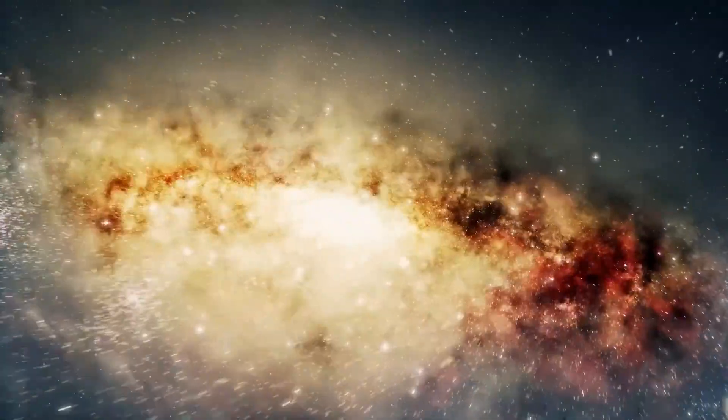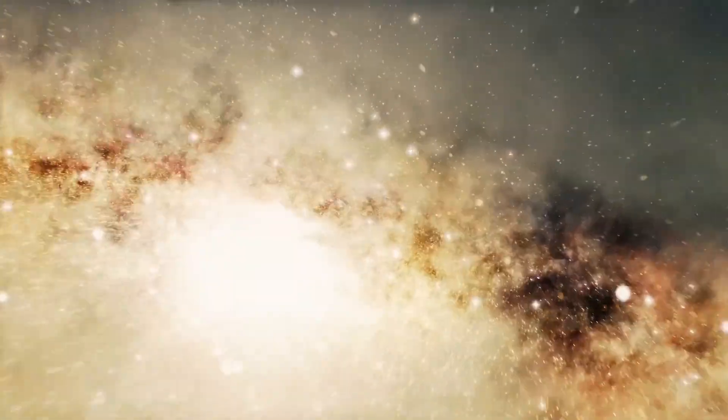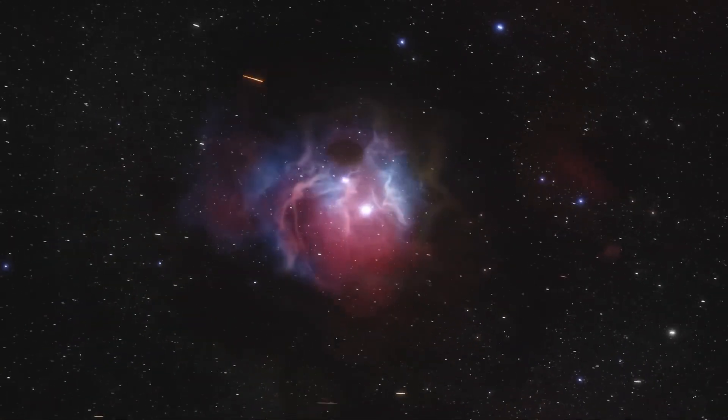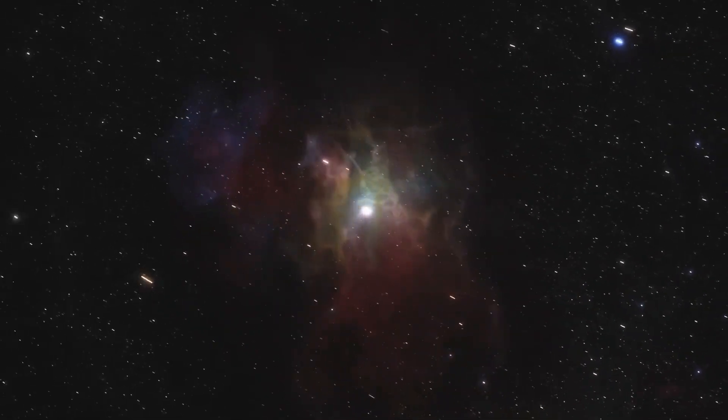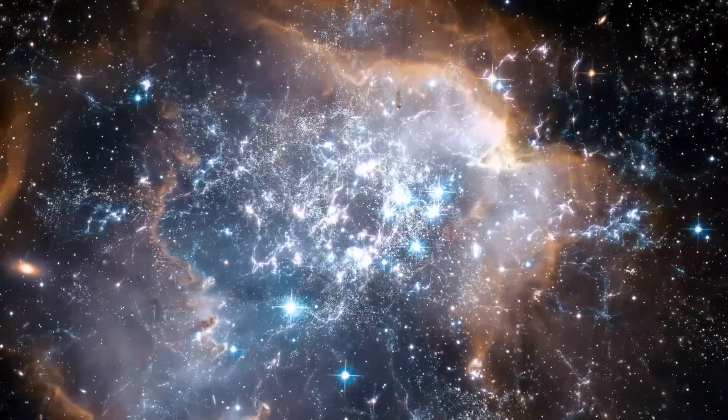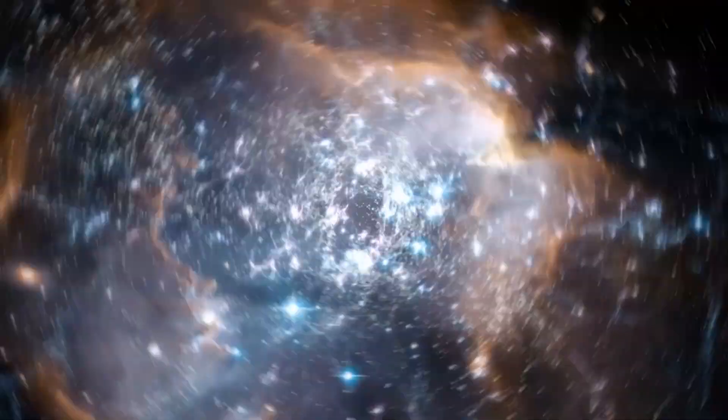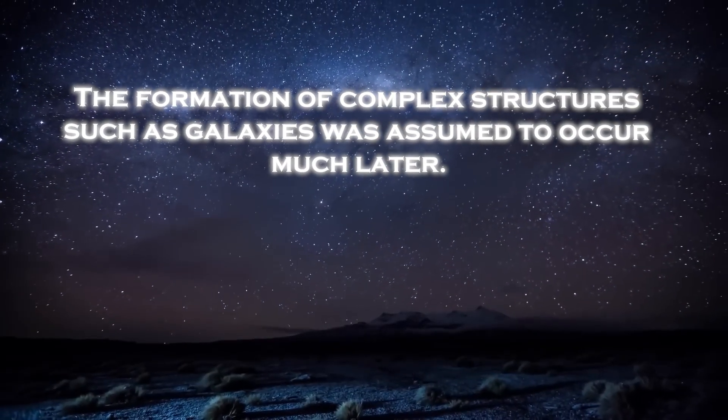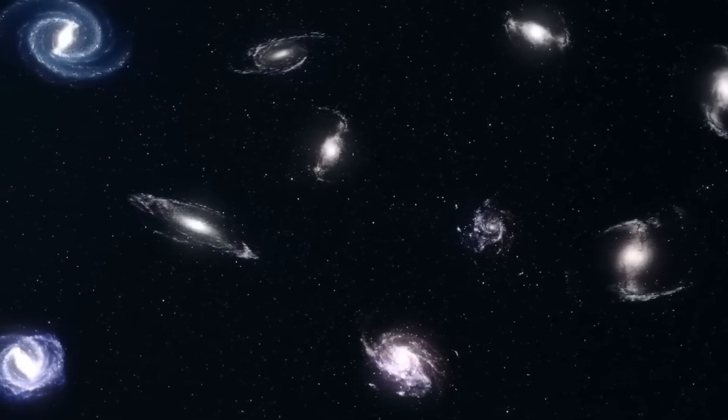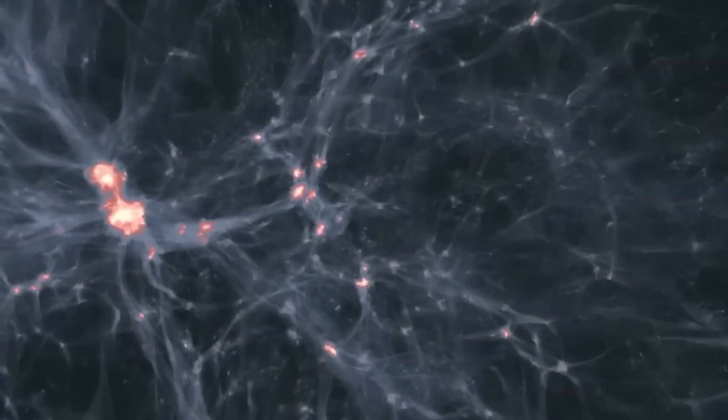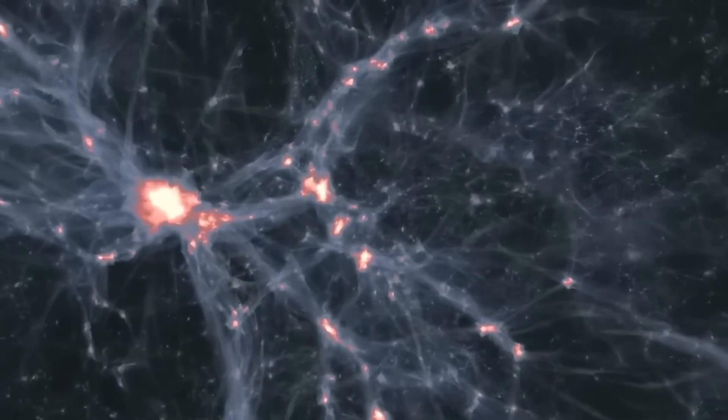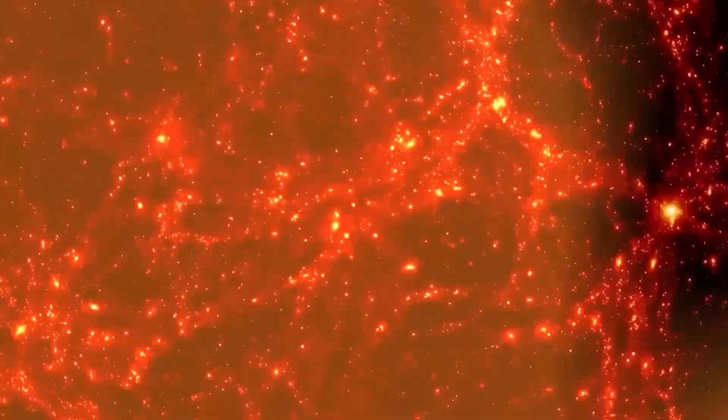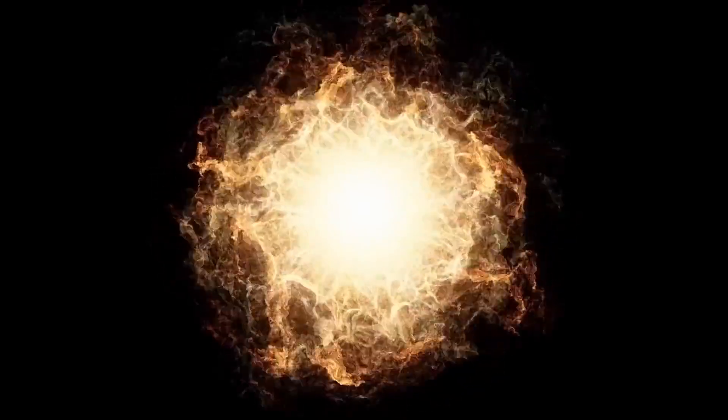The Big Bang theory tells us that the cosmos was a hot mess after the initial event. The first solid objects took hundreds of thousands of years to form, and it took hundreds of millions of additional years for the objects to reach sufficient density and produce light. The formation of complex structures, such as galaxies, was assumed to occur much later. Some of the newly discovered galaxies exceed the Milky Way in size, and their immense luminosity indicates that they were probably forming hundreds of new stars each year, whereas our galaxy formed stars only sporadically.